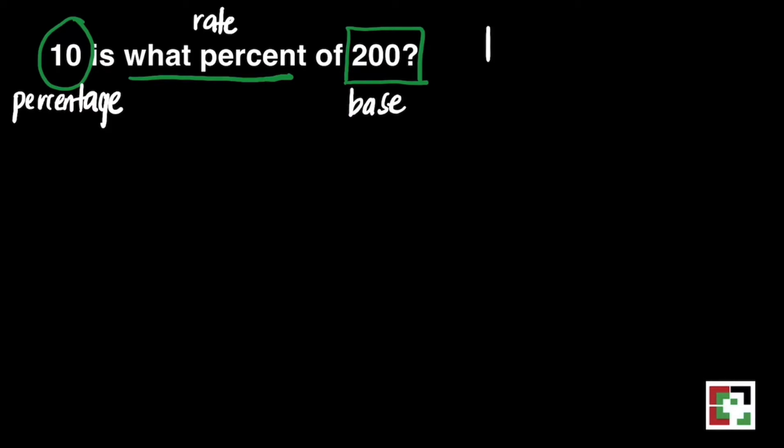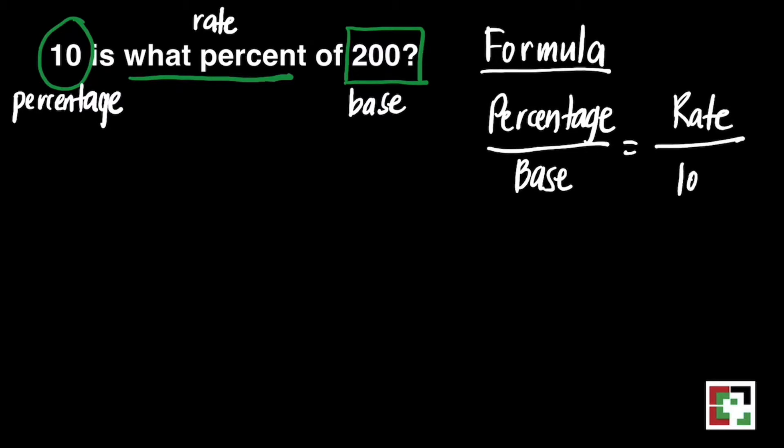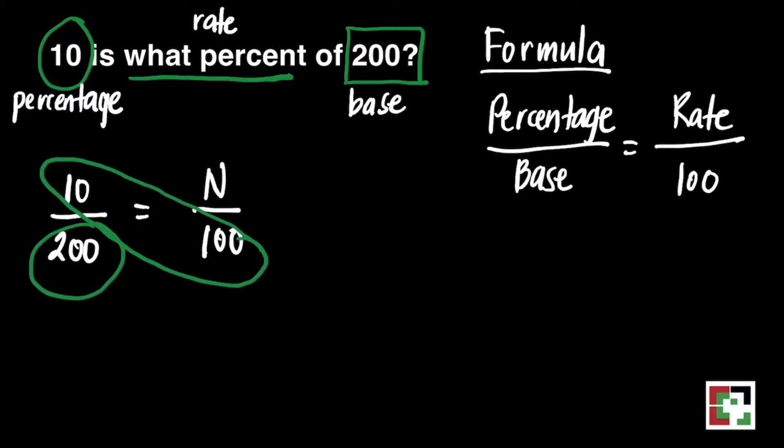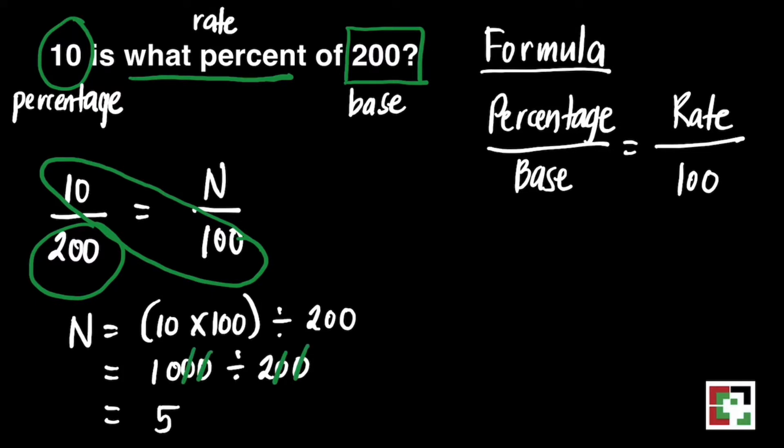We are still going to use the same formula, which is percentage over base is equal to rate over 100. 100 is a constant number. Let's just substitute. 10 over 200 is equal to N over 100. How to find N? Just do cross multiplication. N is equal to 10 times 100 divided by 200. 10 times 100 is 1000 divided by 200. We can cancel the four zeros there. What's left is 10 divided by 2 is equal to 5. Then we can say 10 is 5% of 200.